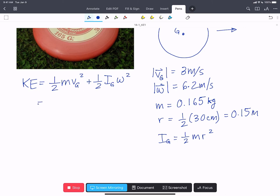So we're going to plug in that ig expression into our kinetic energy equation. So we have one-half m vg squared plus one-half times one-half m r squared omega squared.